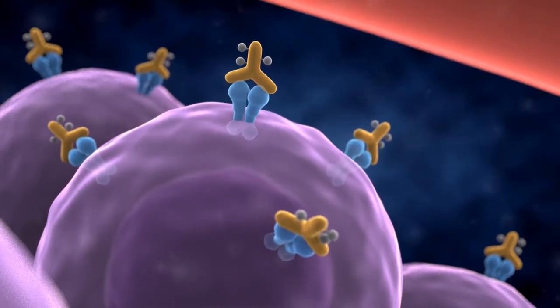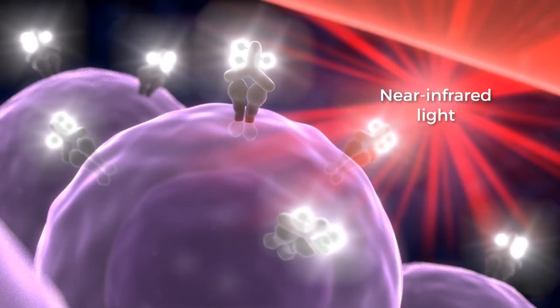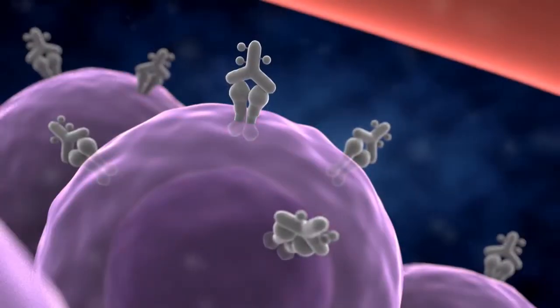Once the conjugate is bound to cancer cells, the photoabsorbing chemical can be specifically activated by near-infrared light. When the chemical has been activated, it causes immediate damage to the cell membrane.